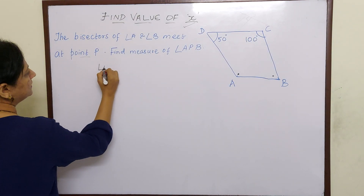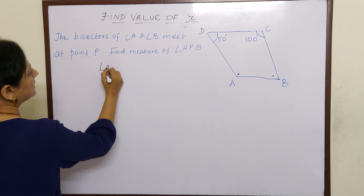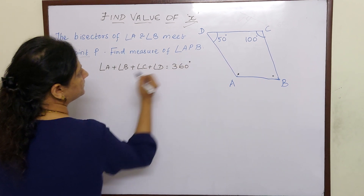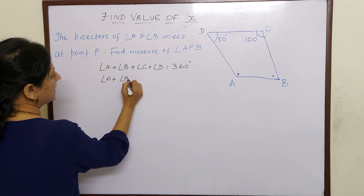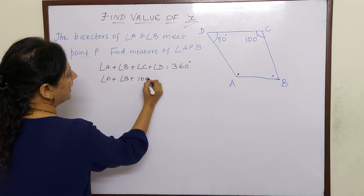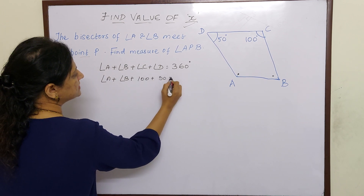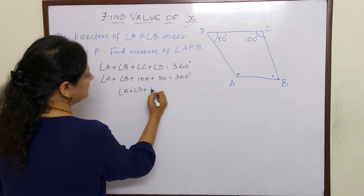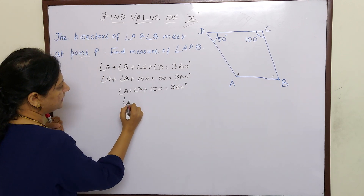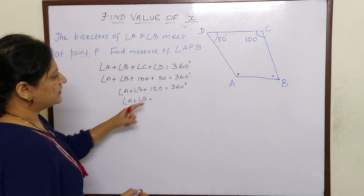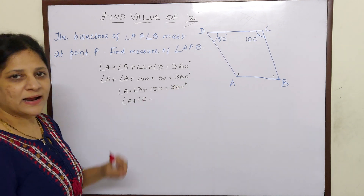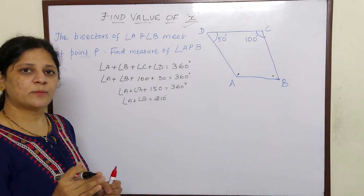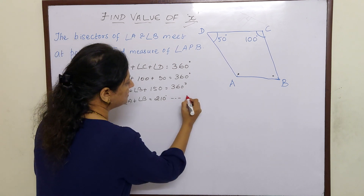Angle D is 50 degrees. So: angle A plus angle B plus angle C plus angle D is equal to 360 degrees. We don't know angle A and angle B, so we write them as they are. But angle C is 100 and angle D is 50 degrees. So angle A plus angle B is equal to 360 minus 150, which is 210 degrees. Let us call this equation one.